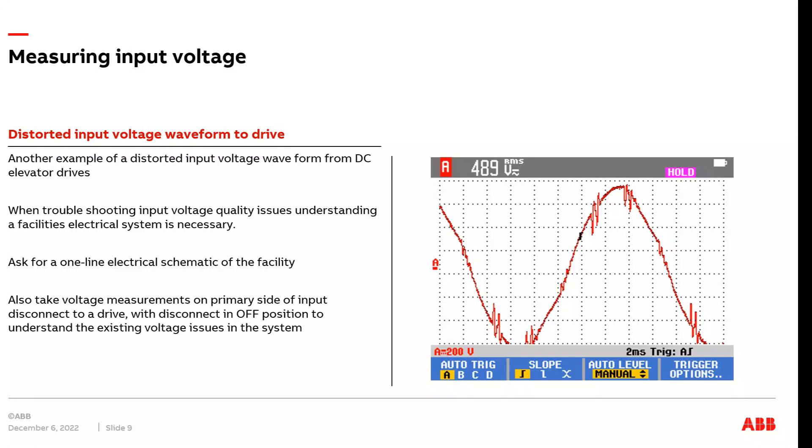It's a good idea to understand what are all the other sources of distortion within a facility. Just because you're troubleshooting a drive, distorted input voltage to the input of the drive, it doesn't mean the drive is the cause of the problem that you are troubleshooting. It may be a good idea to actually, if possible, turn off power to the drive and on the primary side of input disconnect to the VFD, take voltage measurements. This would show you the existing voltage distortion potentially without the VFD even being powered on that you could then show the building owner or chief engineer that your product or the VFD that you sold is not actually the cause of the problems at the job site.